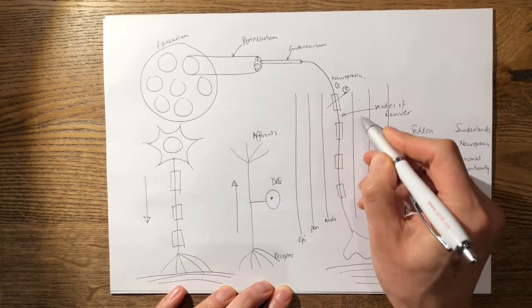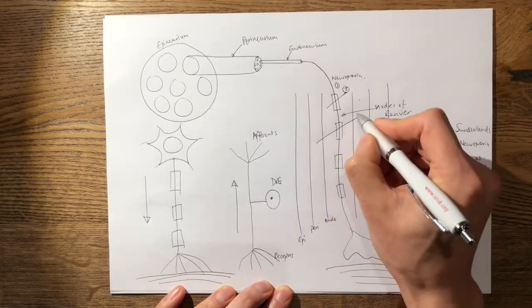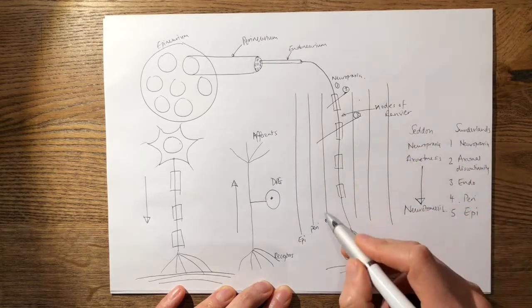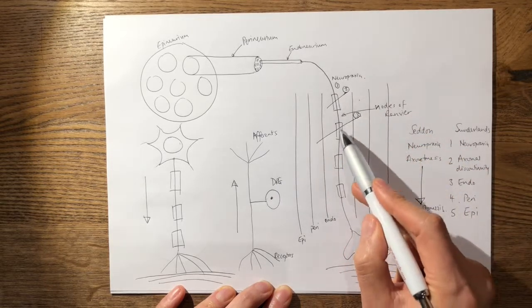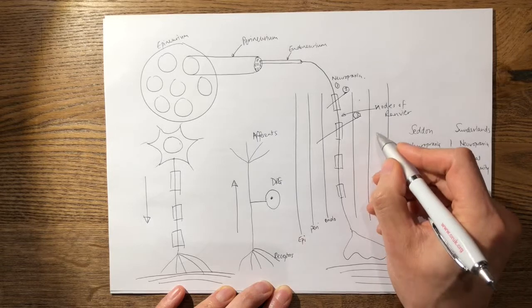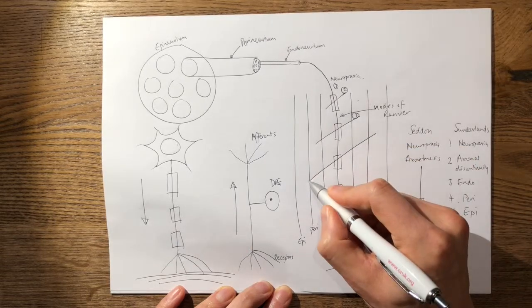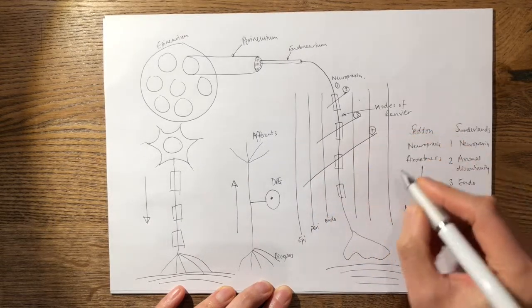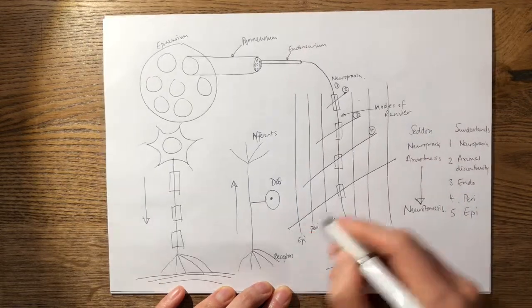Sunderland three would go across here, across the endoneurium, the axon, and the myelin sheath. Similarly, a four will go through the perineurium and a five goes across the whole thing.